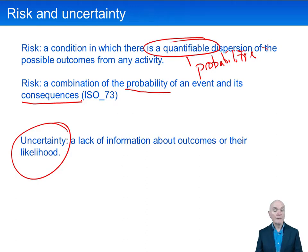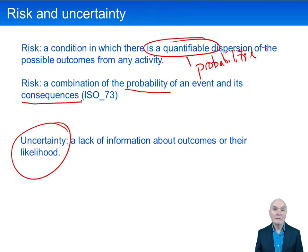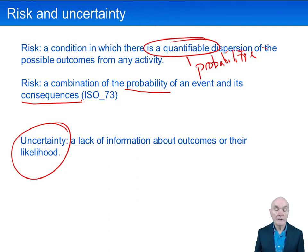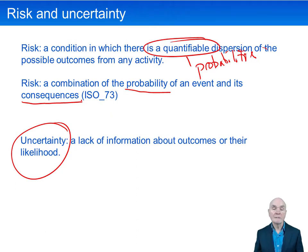Where we get particularly worried is where there's high probability and high consequences. Many people will not undertake adventure sports or dangerous sports because in their own mind — and we've got different perceptions of risk — if I begin skydiving or rock climbing, there is a substantial risk I'm going to fall, and if I do fall the consequences could be severe.